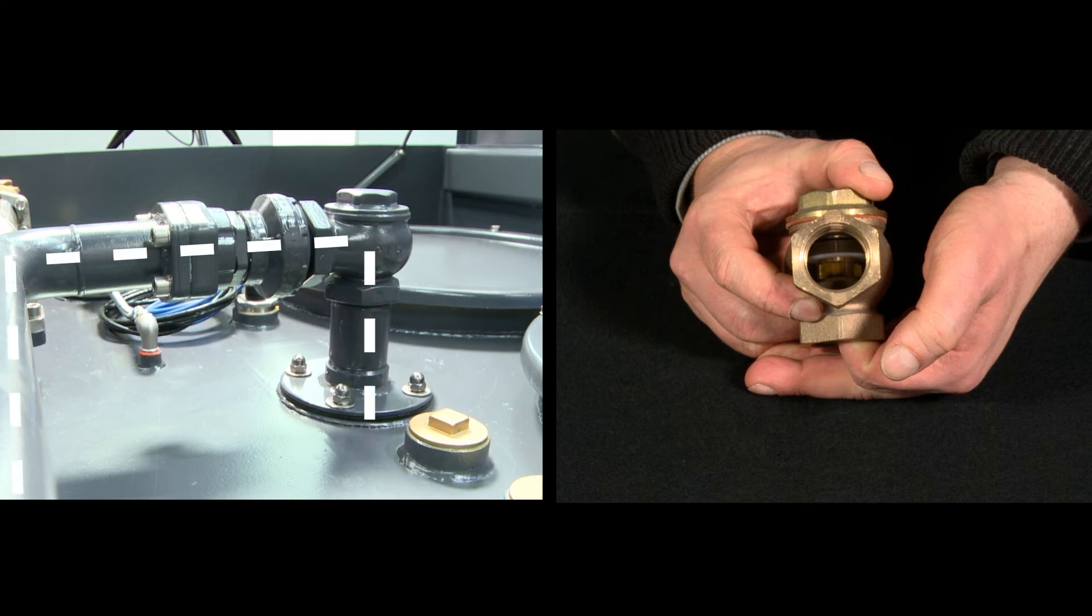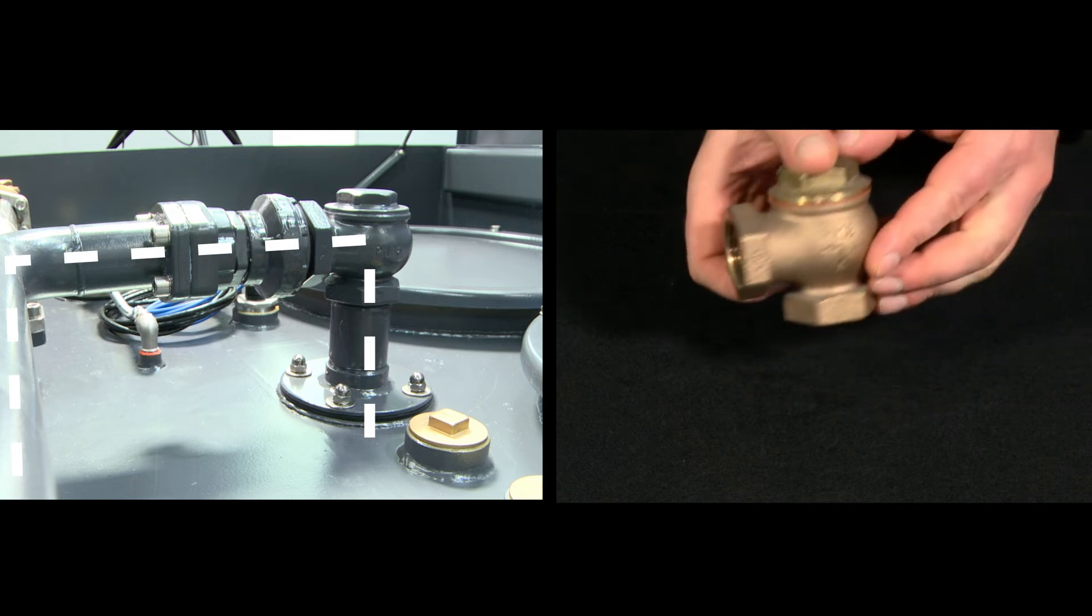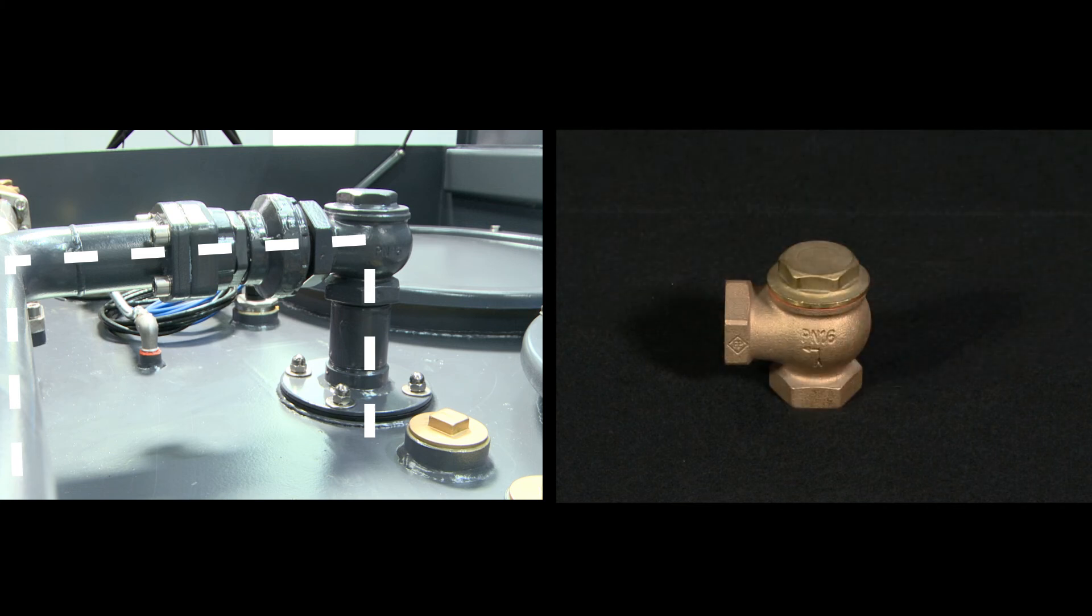At the end of refueling, the dispenser pump stops. The negative pressure drops and the valve cover closes. Thus, the suction line is blocked and a leakage of the tank is not possible.